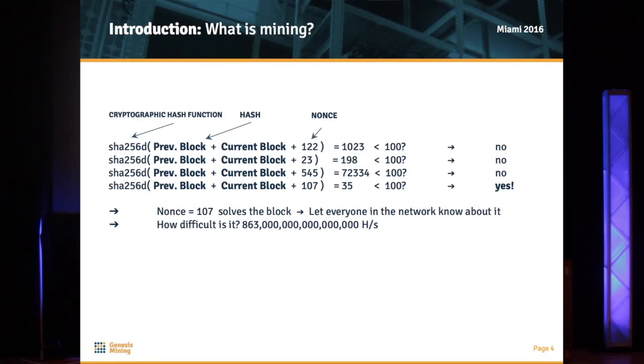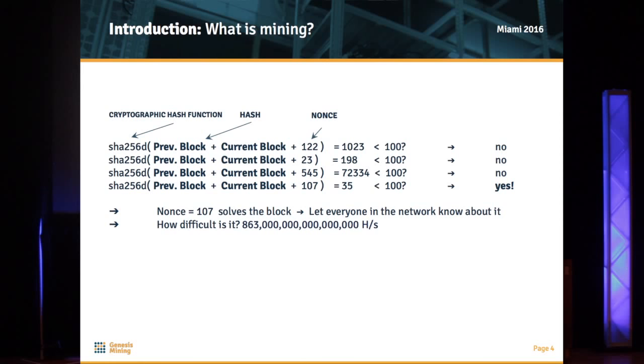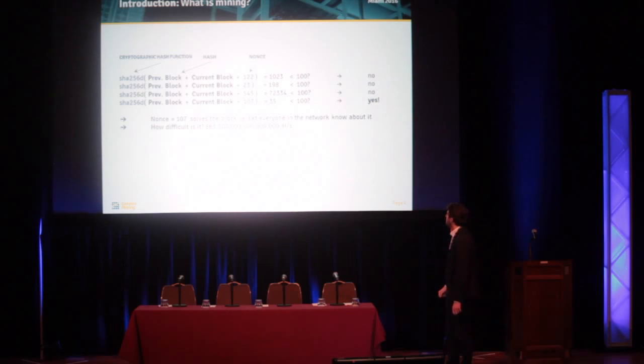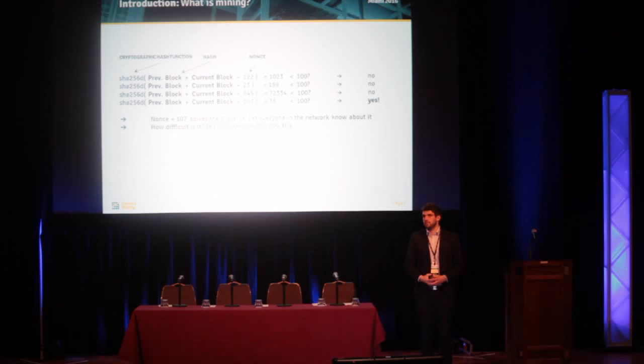With nonce 107, the output is smaller than 100 — you found the block. When you find a block, the network gives the miners the block reward. This is currently 25 bitcoins, and this serves as the incentive for miners to mine. No one except people very eager to support the network would do it without getting a reward.